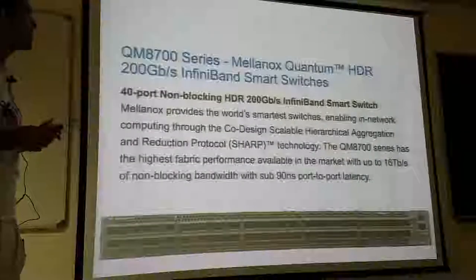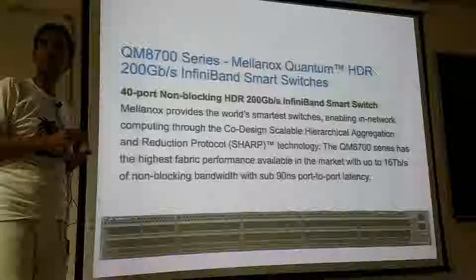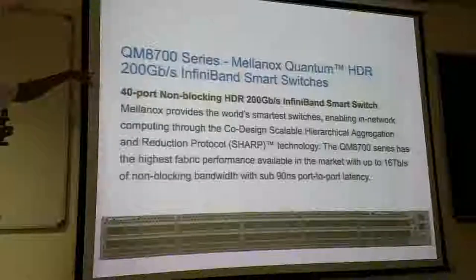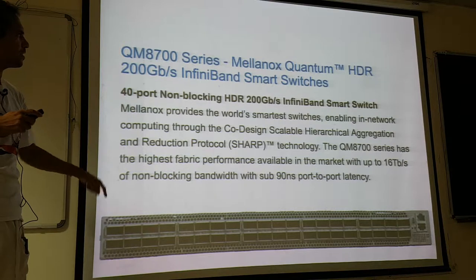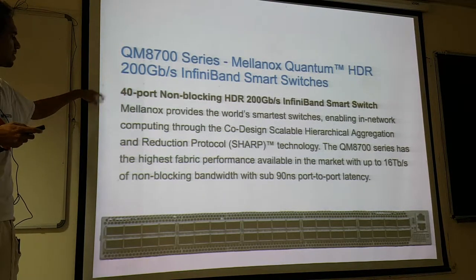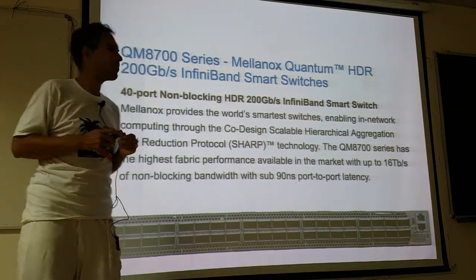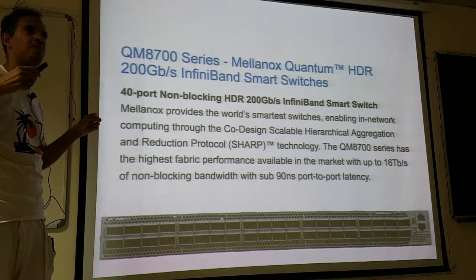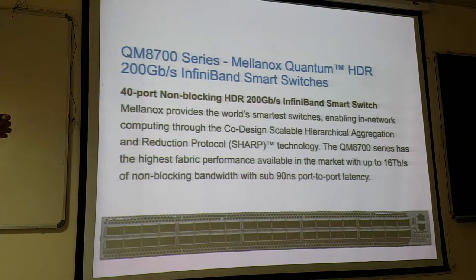The second latency issue is the network. Normal Ethernet can go up to 25 Gbps, but usually you have 1 or 10 Gbps. There's an Israeli company called Mellanox, which has the fastest InfiniBand switch in the world — a 40-port switch with 200 Gbps per port. It's a switching fabric with 40 times 200 Gbps total throughput at the same time.